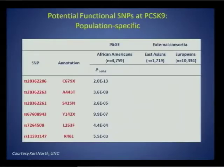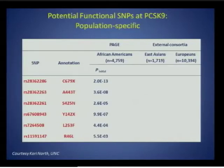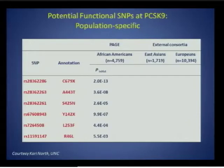The Metabochip pilot data contributed substantially to PAGE's understanding of disease-associated loci. Here are Metabochip data at the PCSK9 locus in relation to HDL cholesterol level. There are six known non-synonymous SNPs in this region, four of which are associated in PAGE African Americans with HDL at p less than 10 to the minus 5. If you condition on the top SNP, the other three remain significant as well, underscoring the value of dense genotyping information over a single SNP.